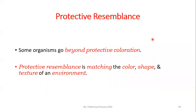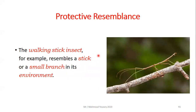Another adaptation is protective resemblance. Some organisms go beyond protective coloration. Protective resemblance is matching the color, shape, and texture of an organism to its environment. For example, the walking stick insect resembles a stick or a small branch in its environment.